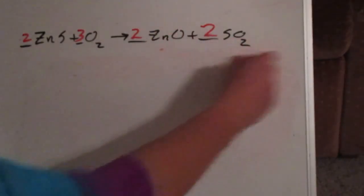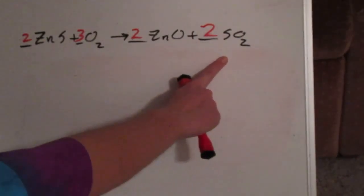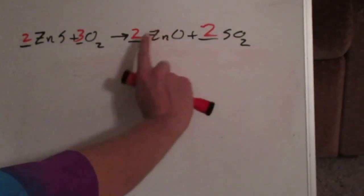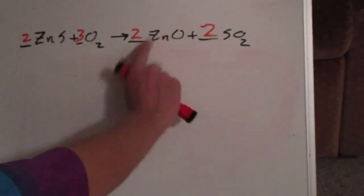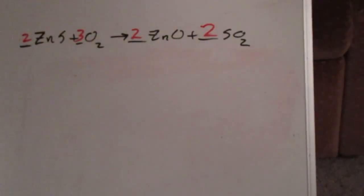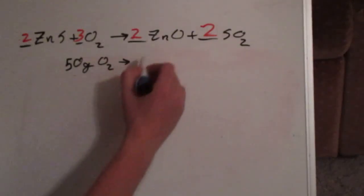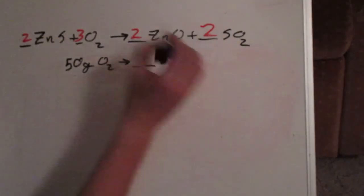A quick note: for magnet class, you need to figure out balancing yourself. For honors, I'll give you the equation but you balance it. For regular, I'll give you the balanced equation. Now let's do a three-step problem: 50 grams of O₂ — how many liters of sulfur dioxide are there? So I'm going from grams to liters.